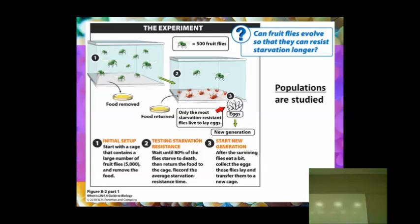The first thing that they do is set up the cage with all the fruit flies inside of it. They've got this large number of fruit flies. In this case, they had 5,000 of them. They remove the food, and they wait until 80% of those fruit flies die. Then they let these two reproduce, and they collect the eggs. Then they do the experiment again.